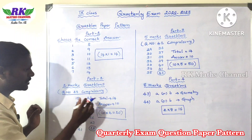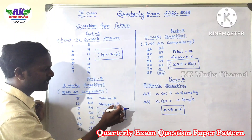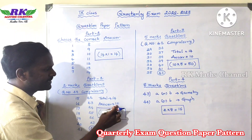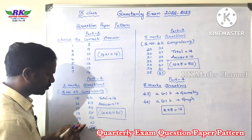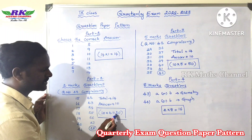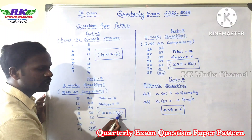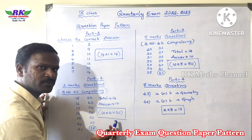Now, in total there are 14 questions. What you do is attempt 10 questions. 10 questions at 2 marks each gives 20 marks.